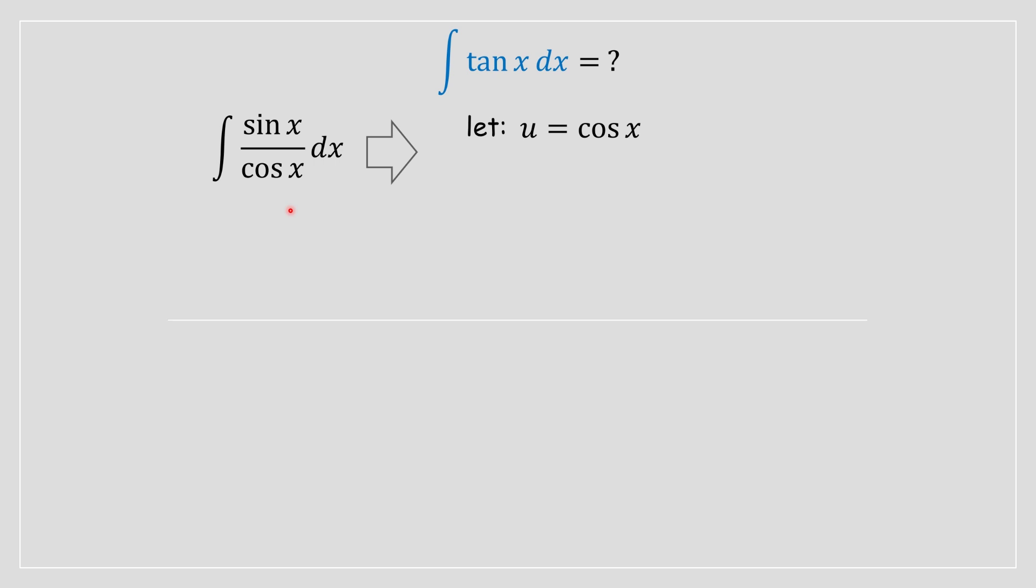So the way we do this is we're going to say that u is equal to cos of x. Once we have done that, we're going to take the derivative on both sides of this equation. When you take the derivative of cos, you're going to have negative sine. And when you take a derivative of u, you're going to have du.